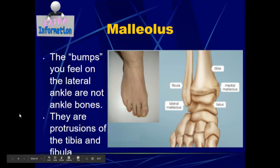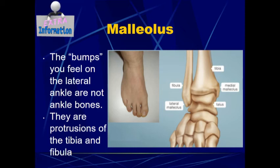Another set of extra information, very similar to the styloid process we talked about with the radius and the ulna — the bumps you feel on your lateral ankles are not ankle bones. Those are called the malleolus: there is the lateral malleolus and the medial malleolus, which are actually protrusions from the end of the fibula and the tibia.